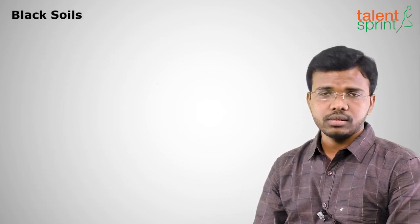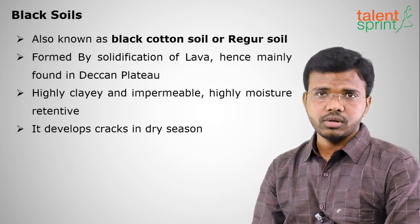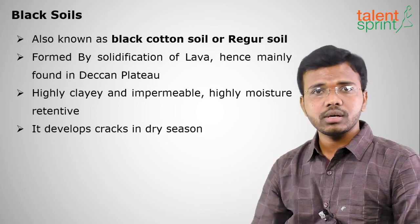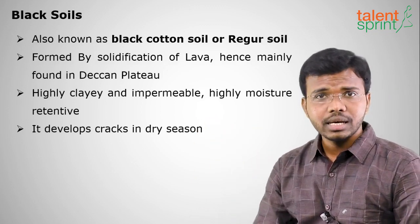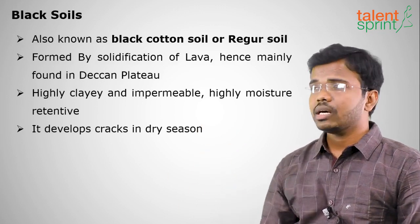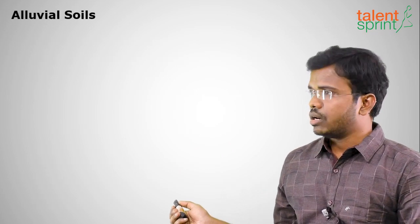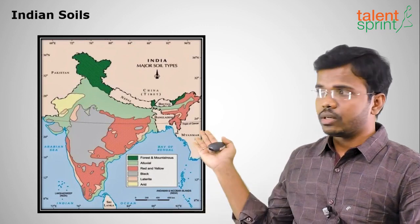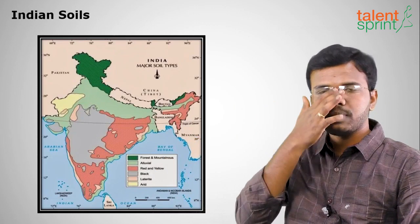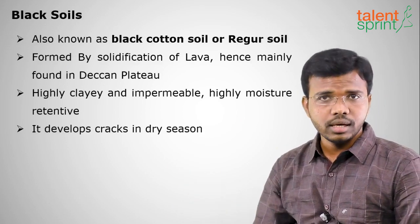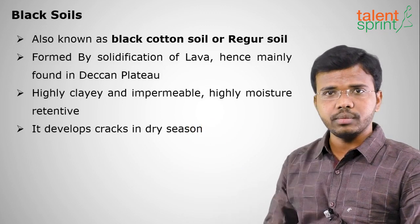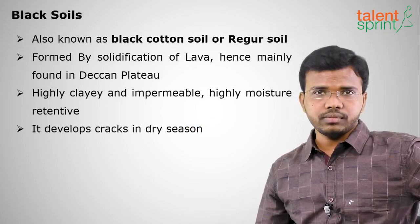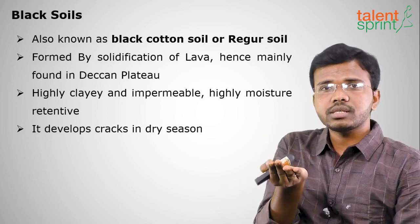Black soils are also called black cotton soils or regur soils because they are very useful for cotton growing. They are generally developed in the Deccan Plateau because of the lava formations — lava which erupted from the Deccan Plateau resulted in the black soils. Black soils are also fertile but lesser than alluvial soils. They are found in Maharashtra, Telangana, some parts of Gujarat, and some parts of Madhya Pradesh. They are highly clay in nature, with low water penetration and high water retention.